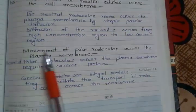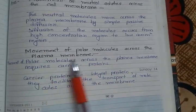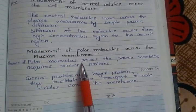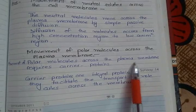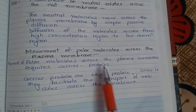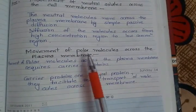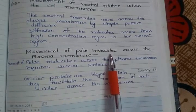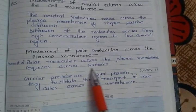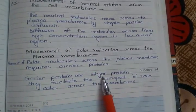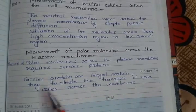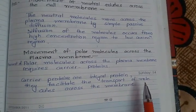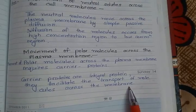The movement of polar molecules across the plasma membrane requires carrier proteins. Carrier proteins are integral proteins and they facilitate the transport of molecules across the membrane.